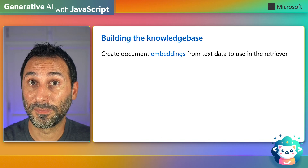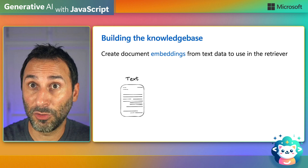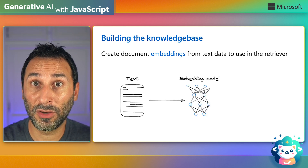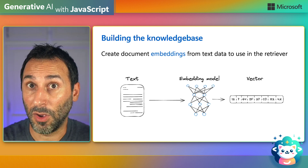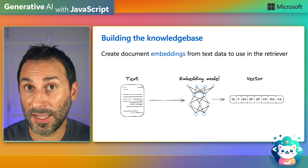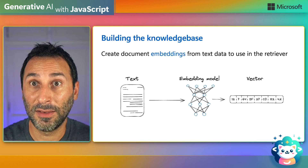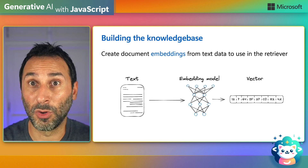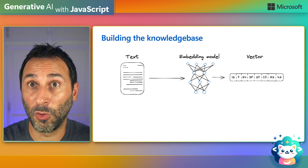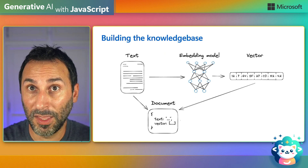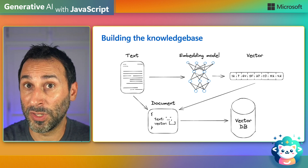To implement RAG, first you have to create the knowledge base. You extract text from documents, then send it to a special AI model called an embedding model that converts your text into a vector. Vectors capture the semantic information of the text, as opposed to just capturing lexical information using words — meaning the meaning of the text is retained regardless of the language used. Next, you put together the vector along with the original text to create a document and store it inside a vector database. You repeat this process for every document you want to include in your knowledge base.